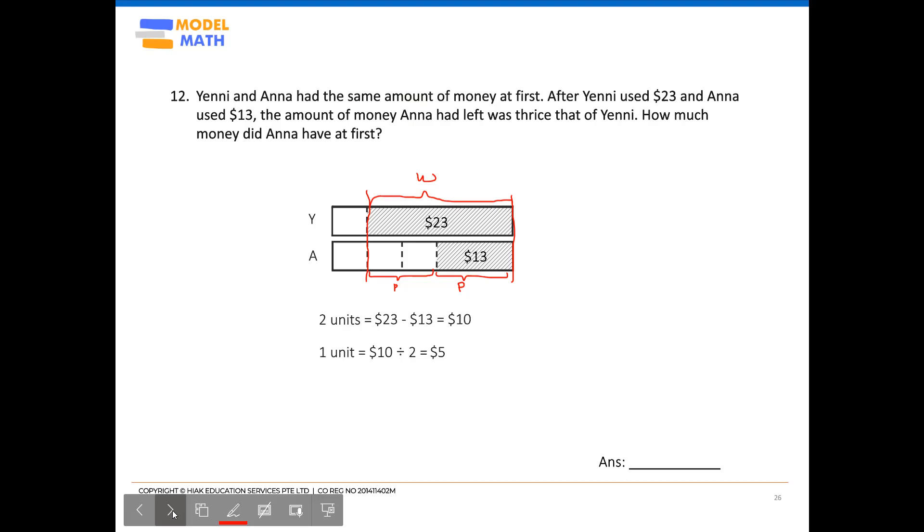So by using Yeni's model, we will use one unit, which is $5, plus $23, which will give us $28. And from here, we have solved the question. The answer will be $28.